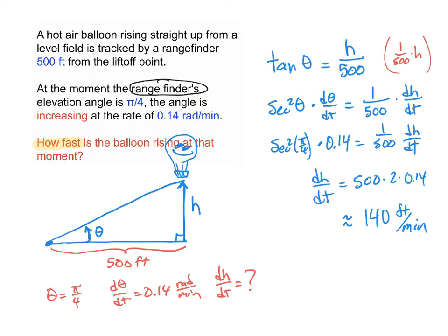Distance is in feet and time in minutes, so dH/dt is 140 feet per minute. We've solved for what we were looking for. I can't stress enough how important it is to write the equation that relates the variables — it's not always obvious. It might come from physics or geometry. Once you have that equation, you can do the calculus.